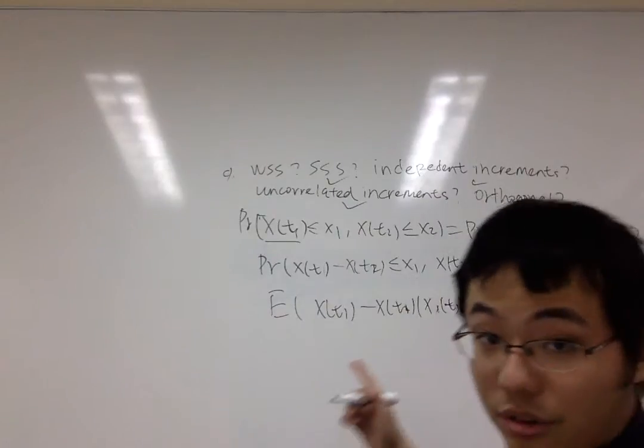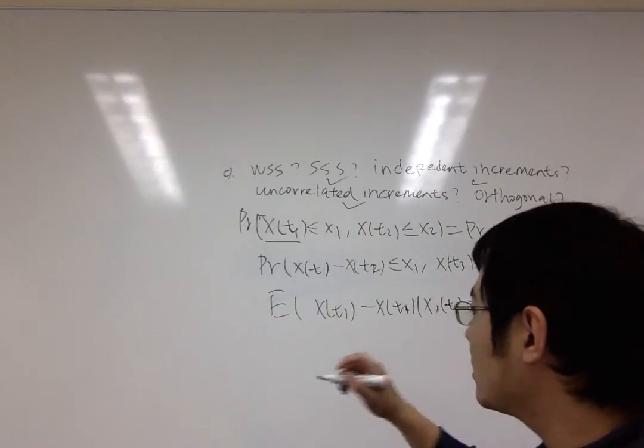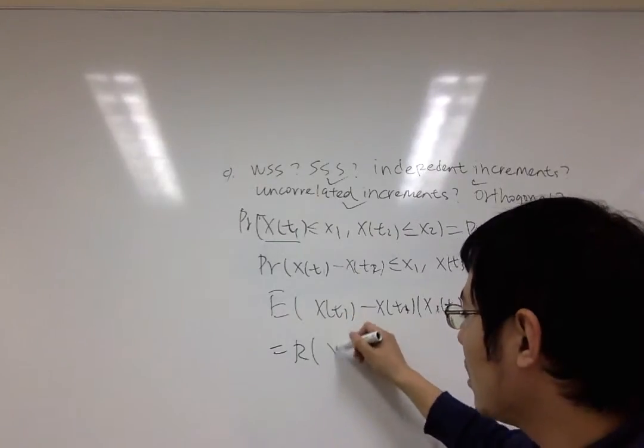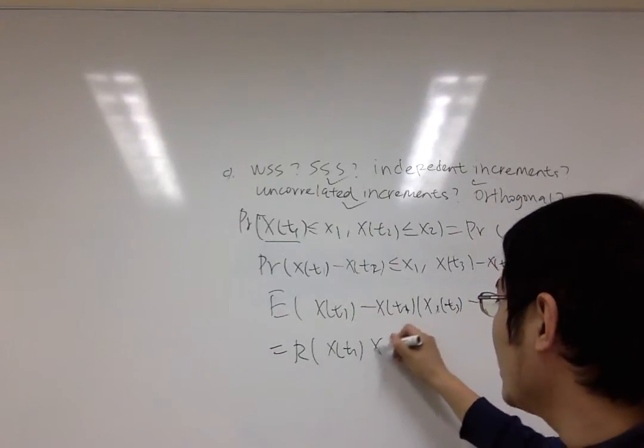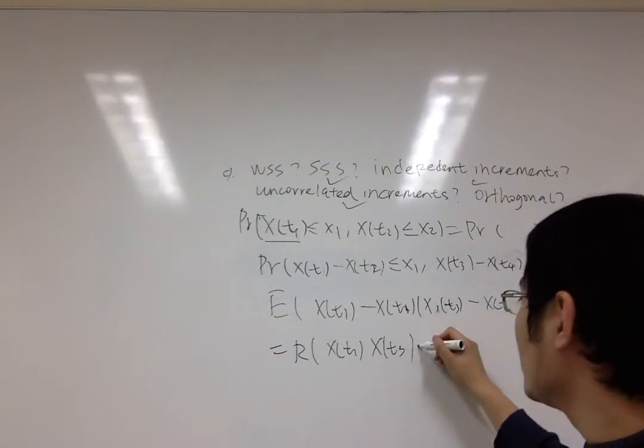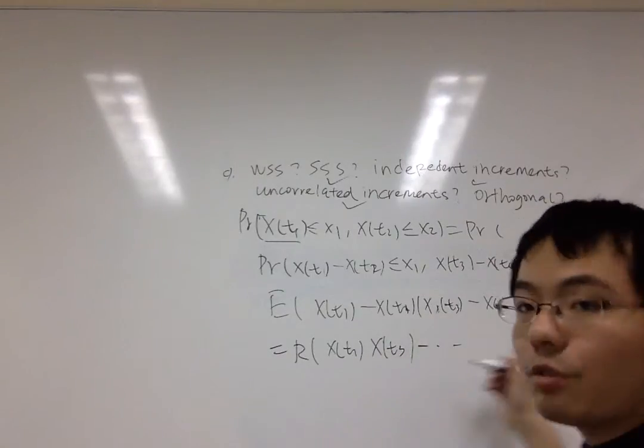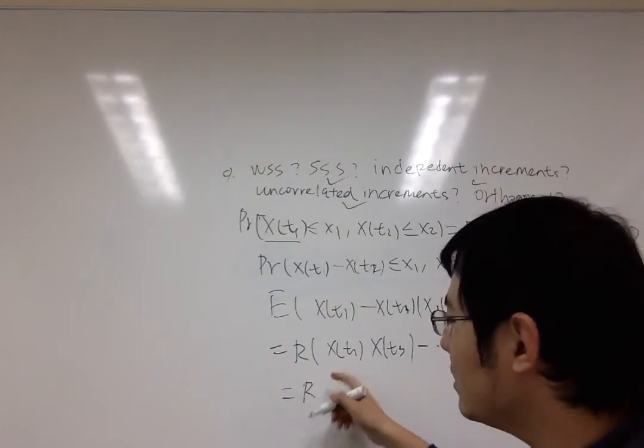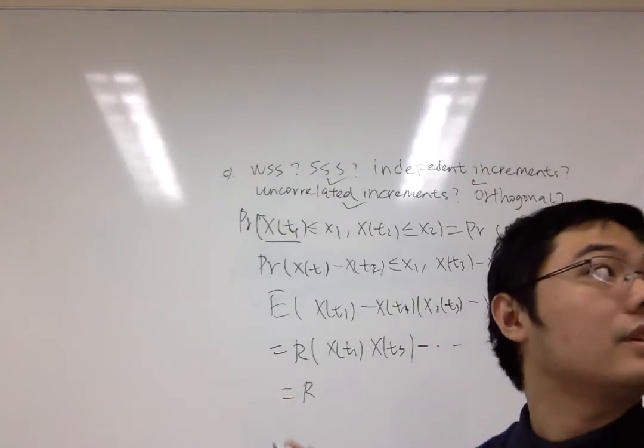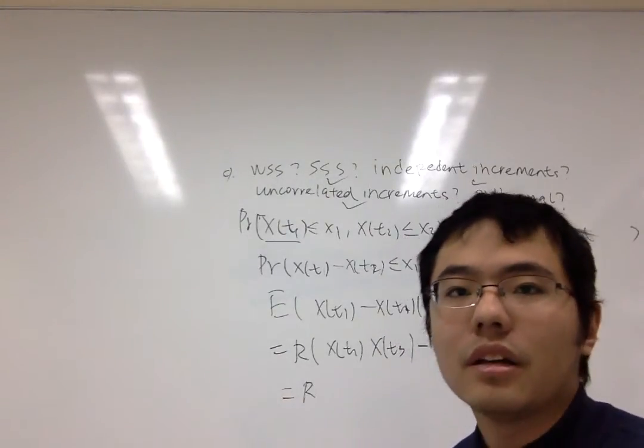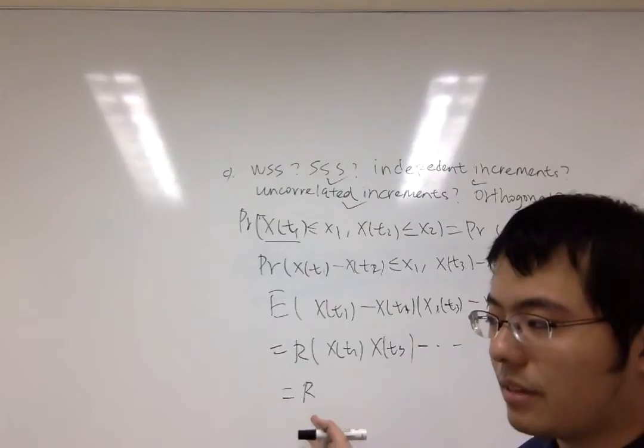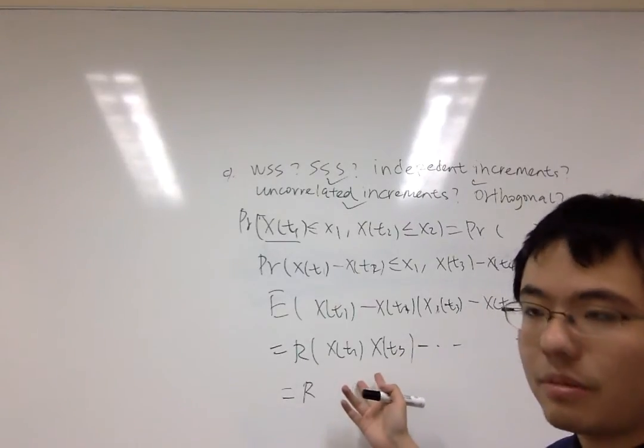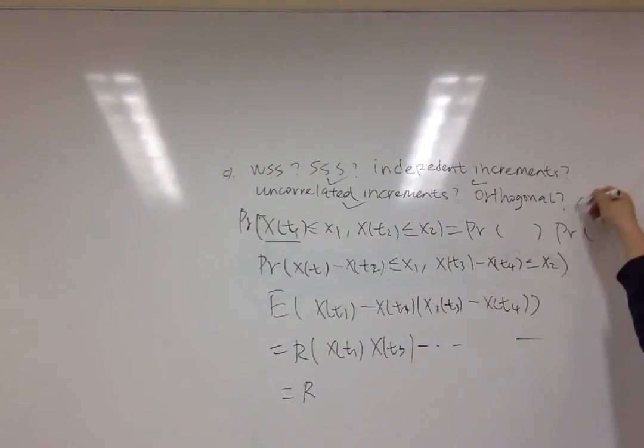This value should be related to the autocorrelation function of Xt. Basically, there are four terms, but this is not an equal function. It's decided by the difference of these two times. So obviously, this is not an orthogonal increment.